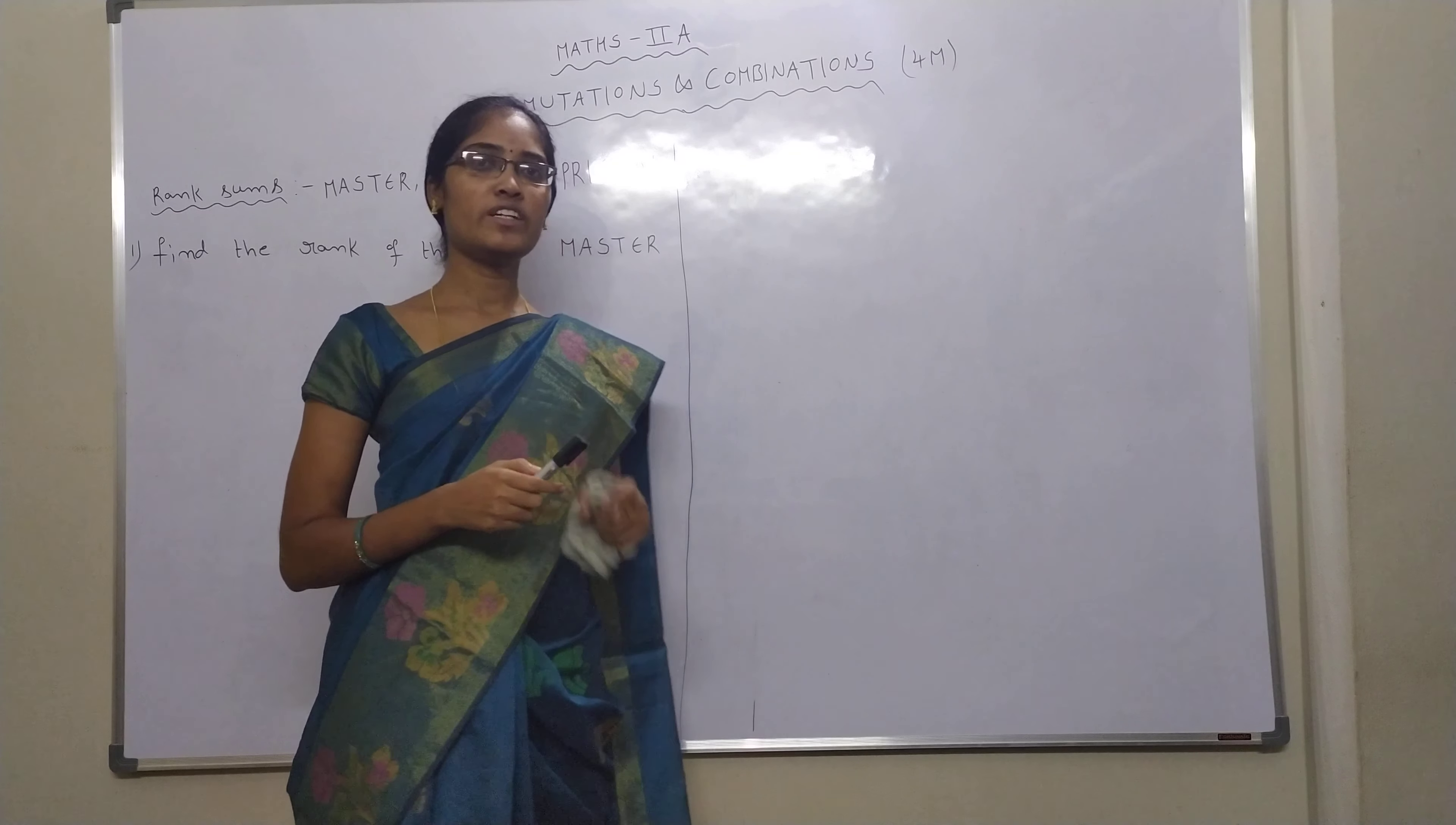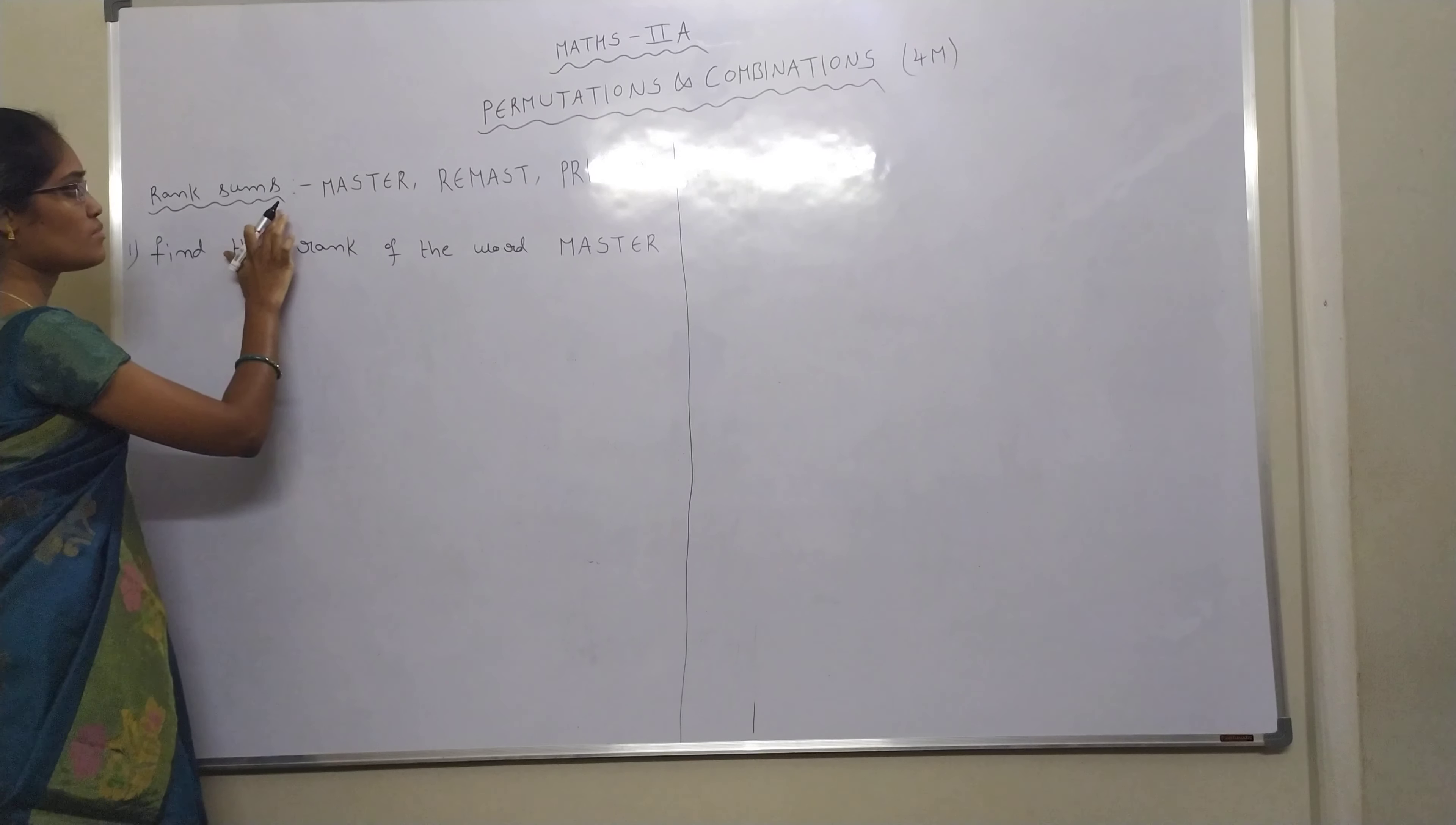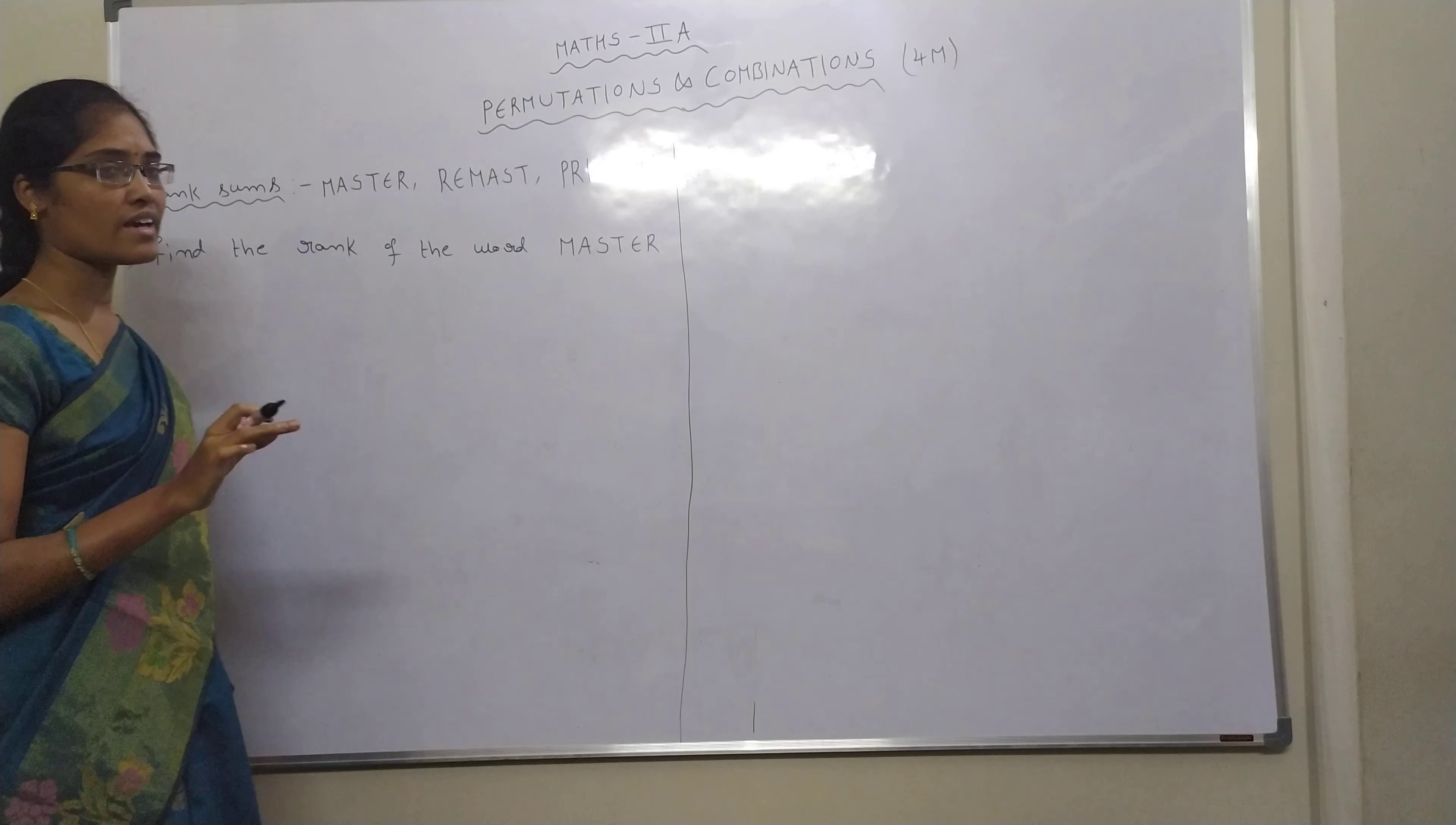Hello students, today we will discuss our math studio permutations and combinations chapter. In this first we will discuss the rank sums. Rank sum is first master remast question. So first sum is find the rank of the word MASTER. Rank finding is very important for four marks.